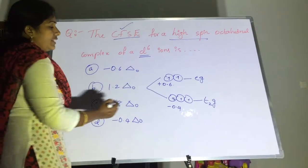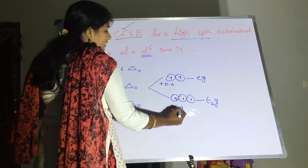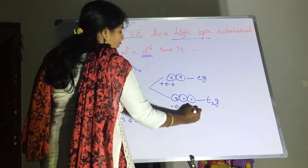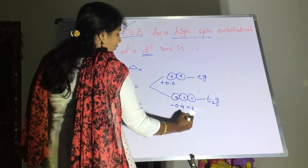Here we have 4 electrons in t2g orbital. So minus 0.4 into 4. So 4 into 4 is 16, minus 1.6 simply.